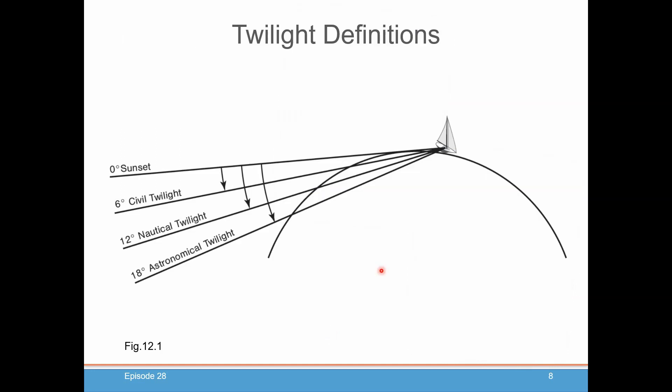So what is so important about twilight? During the day, you have no problem taking sights of the sun because you can see the horizon and the sun. But in the evening, when you want to take star and planet sights — because that's when they'll be visible — you still have to be able to see the horizon and the stars and planets. That's only really possible between civil and nautical twilight.